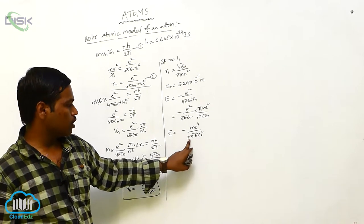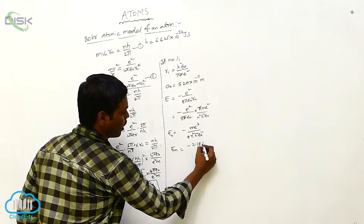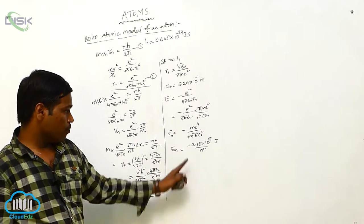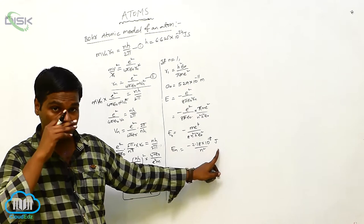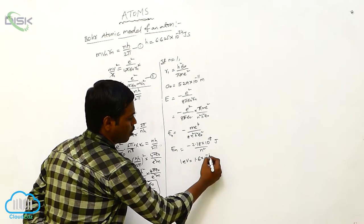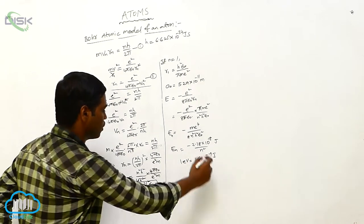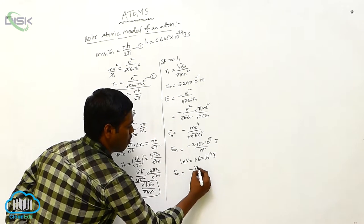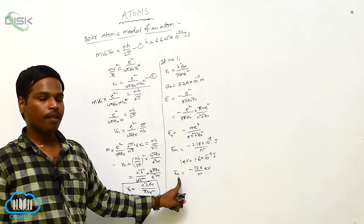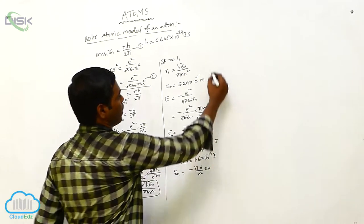If we substitute all the values into this equation, we get E = −2.18 × 10⁻¹⁸ / n² joules. Converting using 1 eV = 1.6 × 10⁻¹⁹ joules, we get En = −13.6 / n² electron volts. This is the energy of the Bohr atom.